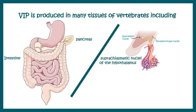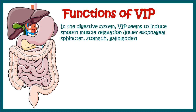Now let's look at the functions of VIP and the roles it plays in the body. The half-life of VIP is very short — it is only available for two minutes, after which it is degraded. This tells us that within a particular time frame, the hormone can act specifically.